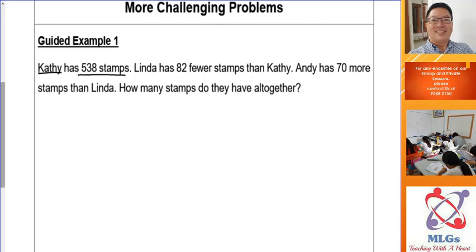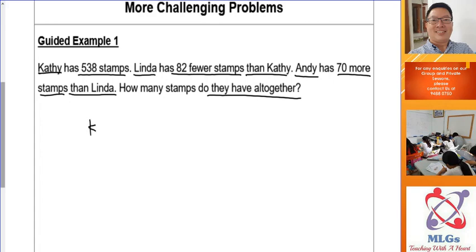Let's look at Guided Example 1. Katie has 538 stamps. Linda has 82 fewer stamps than Katie. Andy has 70 more stamps than Linda. How many stamps do they have altogether? When I see 'fewer than' or 'lesser than' or 'shorter than', I think of the comparison model. You always start drawing from the first sentence.